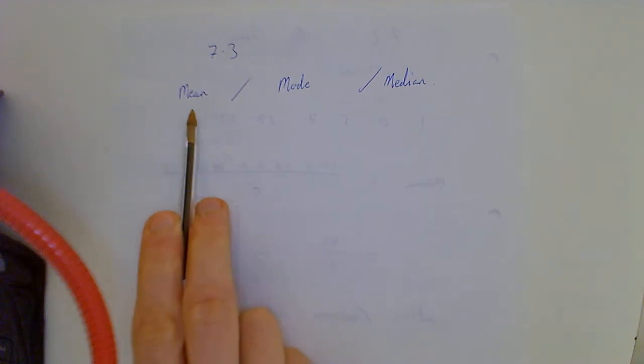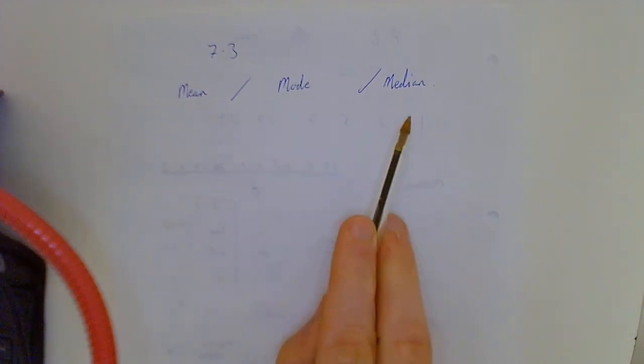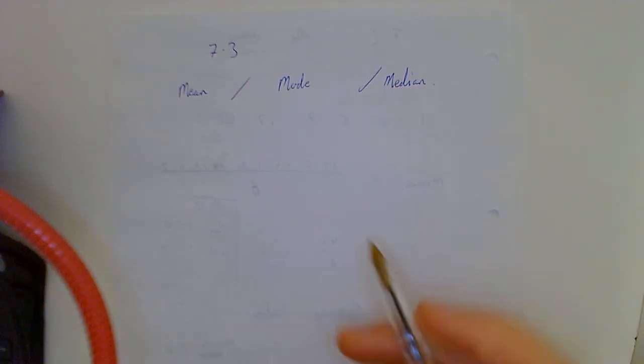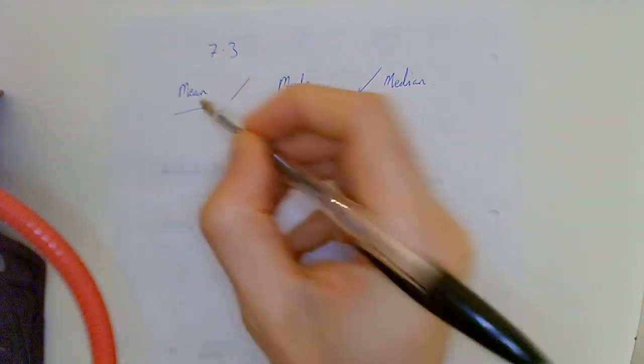All this is asking us is they're gonna ask us a question and say find the mean or find the mode or find the median, or find all three or one out of them or two out of them, and then they're gonna say which is the best measure of average. That's all they're gonna ask you.